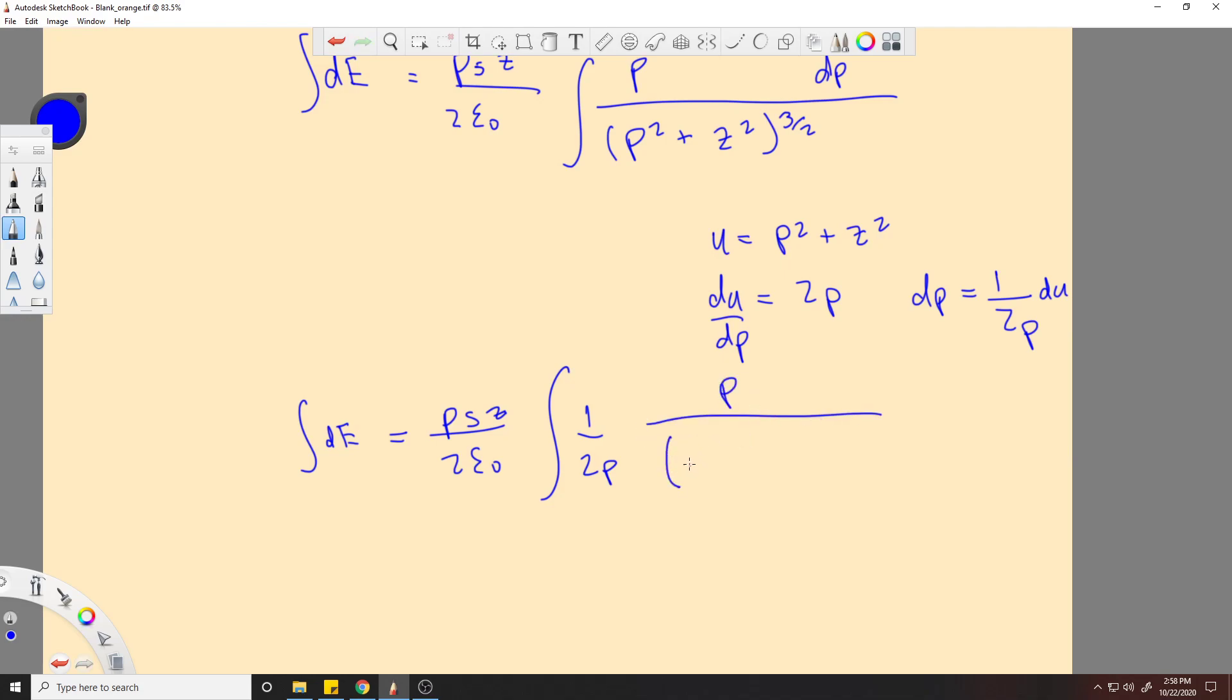So I'll plug in this here, 1 over 2 rho, rho. These rho's will cancel. Oh shoot, this is supposed to be our u, sorry. Because I'm just plugging in this u that I have here, right? So this would be u to the 3 halves. This rho will cancel with that rho, and then we'll be left with du.